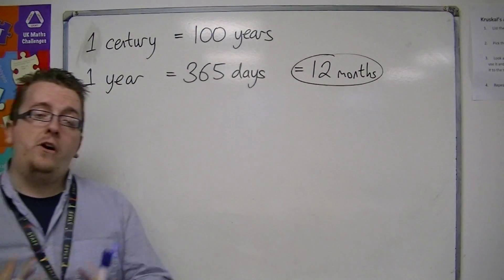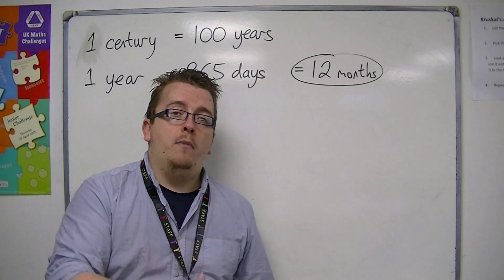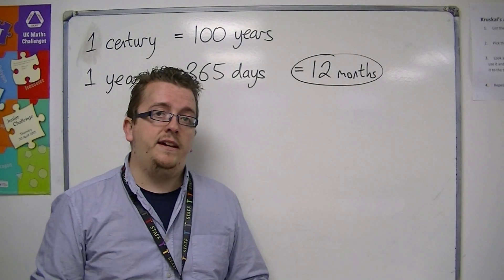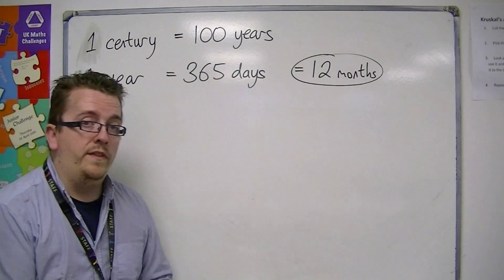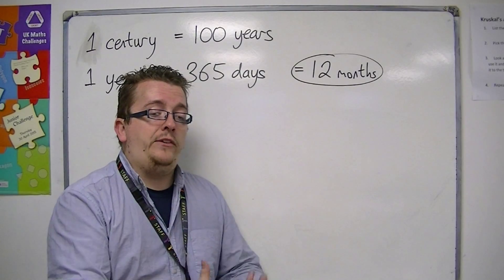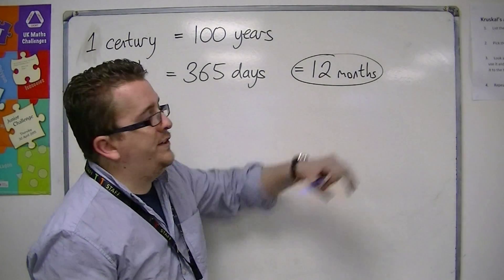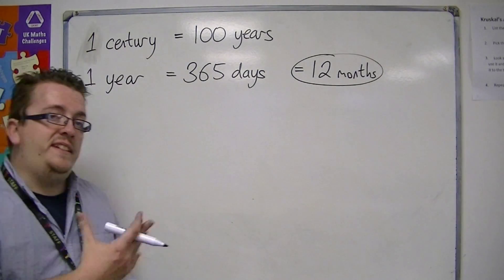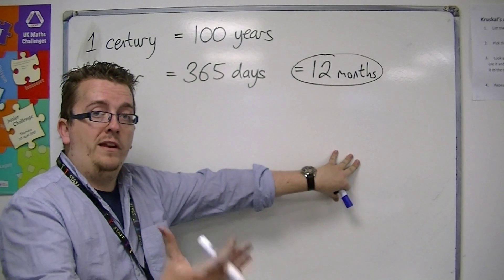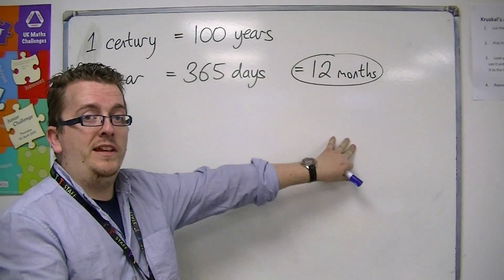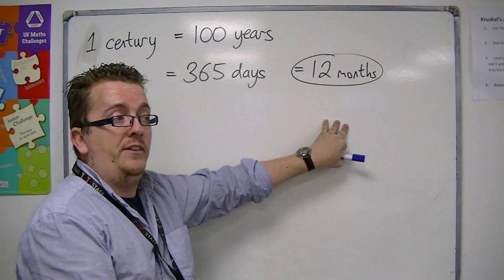We know that there are twelve months in a year. The only problem with that is that each month either has 28 days, 29 days for February if it's a leap year, 30 days, or 31 days. So the actual number of days in a month is inconsistent. You might have been taught: '30 days have September, April, June, November. All the rest have 31, except February alone, which has 28 days clear, and 29 days each leap year.' That's the rhyme that allows you to memorise how many days there are in each month.